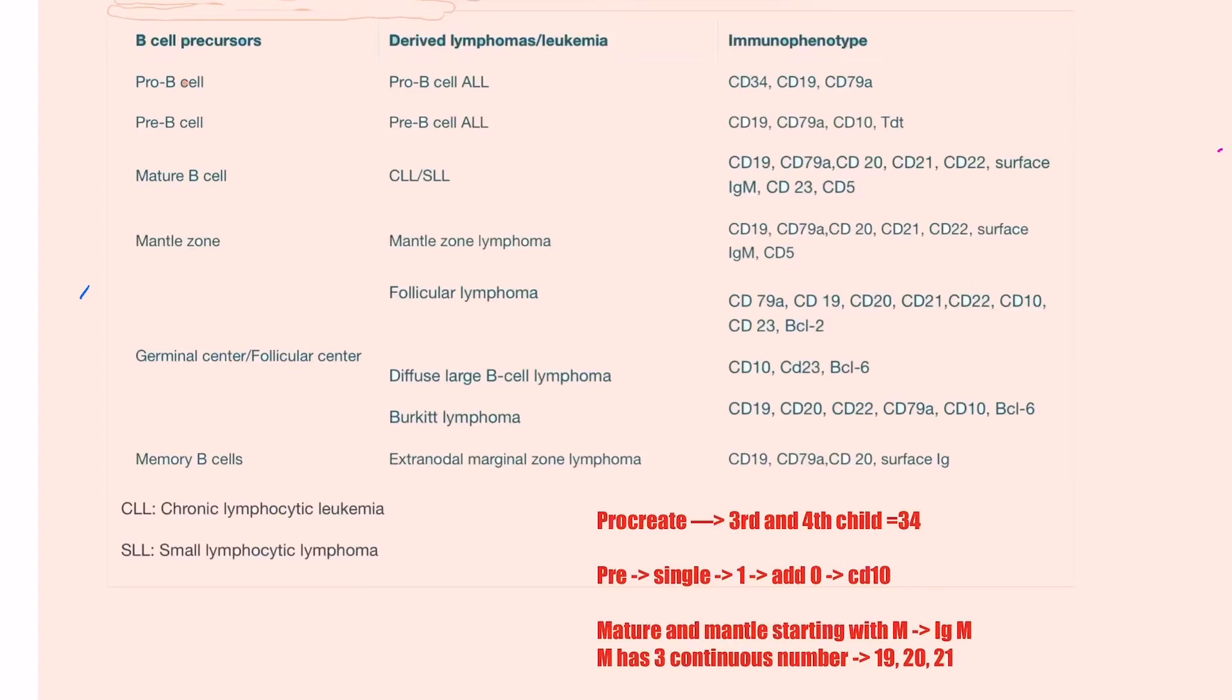Here is an effort to remember the B cell precursors. Pro is equal to procreate. When we procreate, husband and wife are first and the second member. They procreate to produce third and fourth member of the family, so 34. Also remember that B cell here is equal to second, and the second World Cup was played in 1979.